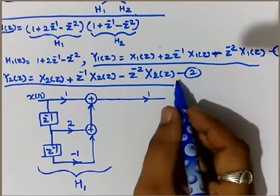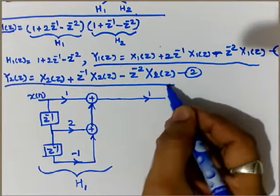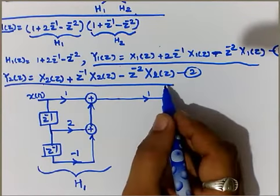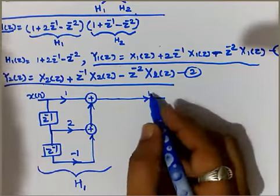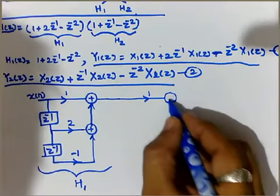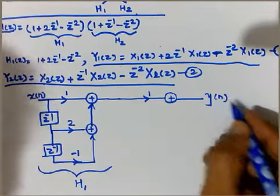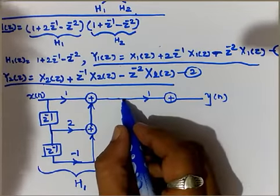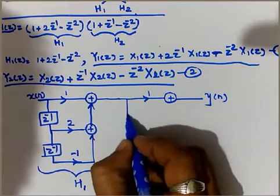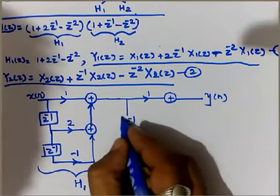Here it is nothing but z^-1. Since it is x2 of z, now we are doing it for h2 of z, so refer equation number 2. From this equation it is 1, so write here 1, sum it to get resultant y of n. I will take the same signal from this point to write it as z^-1.